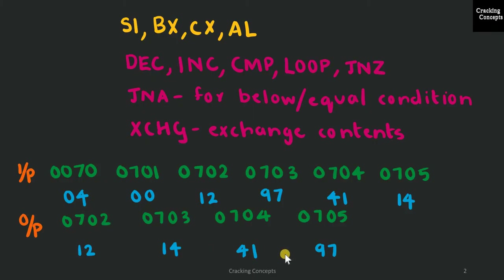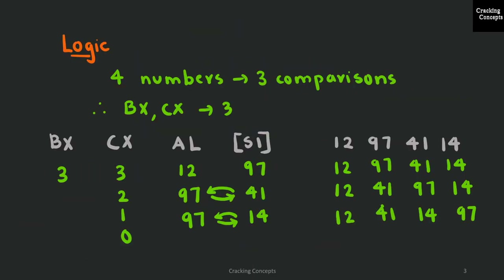The sorted result will be 12, 14, 41, and 97. Now, looking into the logic — since we have four numbers we'll be performing three comparisons each set, giving three sets of three comparisons. So I'll need two counters, which is why I'll be setting both BX and CX to 3.